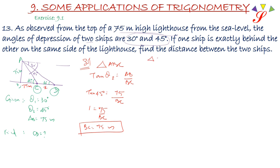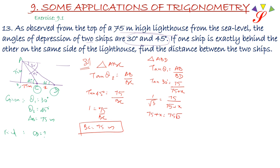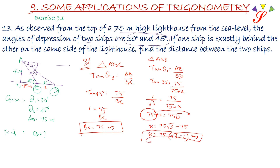Therefore, for the second triangle ABD, tan theta 1 equals AB upon BD. So tan 30 = 1/√3, which is equal to 75 upon BD, where BD is 75 plus X. So 75 + X equals 75√3. Therefore x equals 75√3 minus 75, which gives x = 75(√3 − 1) meter. And this is CD = 75(√3 − 1) meter.